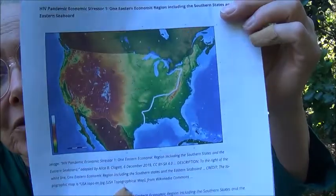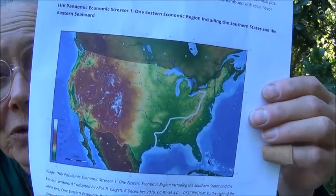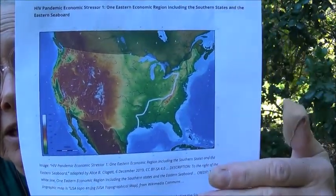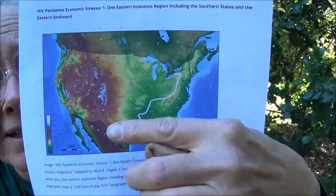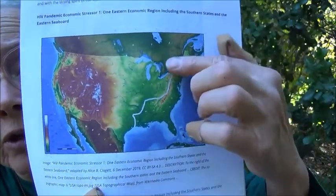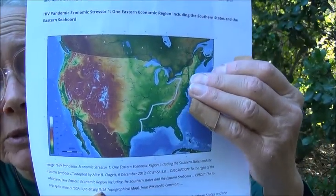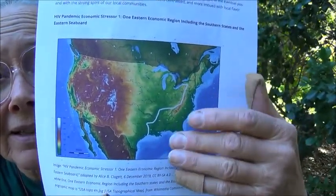The first map is entitled HIV — that's the AIDS pandemic — HIV Pandemic Economic Stressor One: Eastern Economic Region, including the southern states and the eastern seaboard. You can see a topographical map of the United States that also shows aridity and rainfall. States that are green have more rainfall, states that are yellow less, and states that are red very little rainfall. I've drawn a white line showing an economic region that includes the eastern seaboard and the southern states. These states are very much affected right now by the HIV and AIDS pandemic, and my thought was that that might act as a stressor that would consolidate that group of states into an economic region.